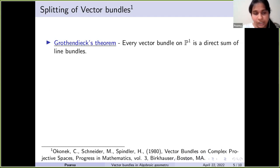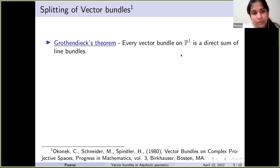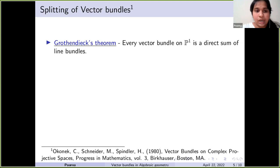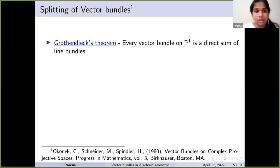The line bundles on projective space are parametrized by Z, the group of integers — for every integer m we have an associated line bundle O(m). Grothendieck proved that any vector bundle on P¹ is a direct sum of such line bundles. It was immediately also proved that even over P², there are vector bundles which are indecomposable — which cannot be written as a direct sum of line bundles. So the question became: what condition should we impose on vector bundles on projective spaces so that they split as a direct sum of line bundles?